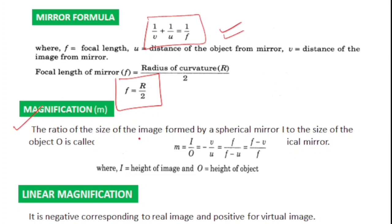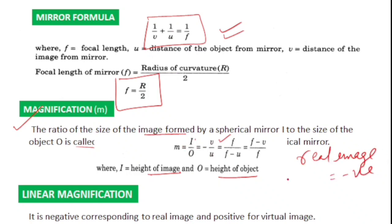Magnification is the ratio of the size of the image to the size of the object. It equals I/O (height of image to height of object), and in terms of distances, magnification m = v/u. Magnification is always negative for a real image and positive for a virtual image formed on the same side of the mirror.